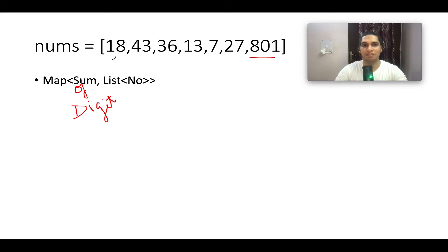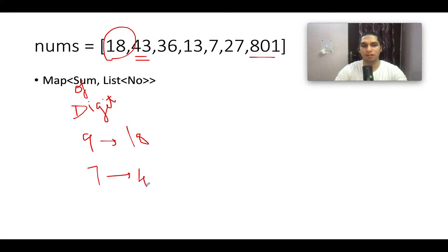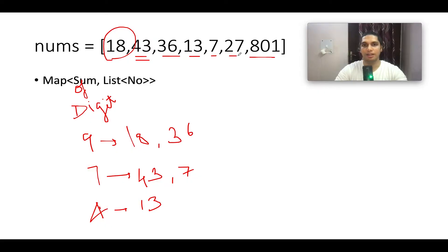Let's check which numbers have the same sum of digits. 18 has digit sum 9, so corresponding to 9 the first element is 18. 43 has digit sum 7, so corresponding to 7 the first number is 43. 36 also sums to 9, so we write 36 there. 13 sums to 4. 7 has digit sum 7. 27 has digit sum 9 (2+7). Then 8, 0, 1.